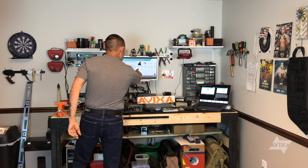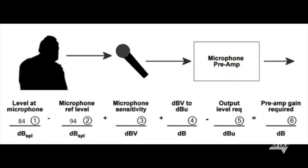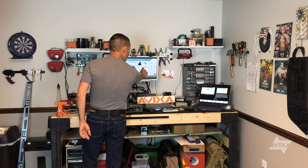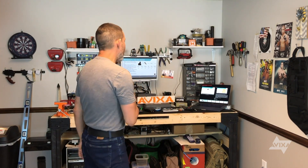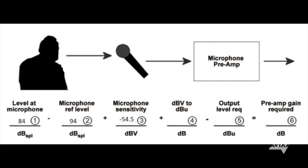So: 84 dB level at the microphone, minus the reference level of 94 dB, gives me negative 10. Add in the microphone sensitivity of negative 54.5, and I get negative 64.5.